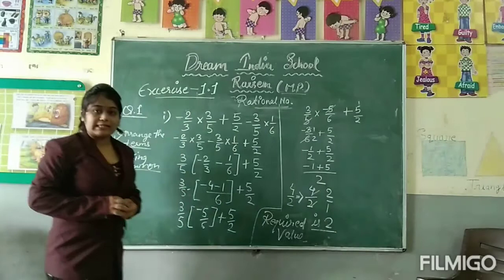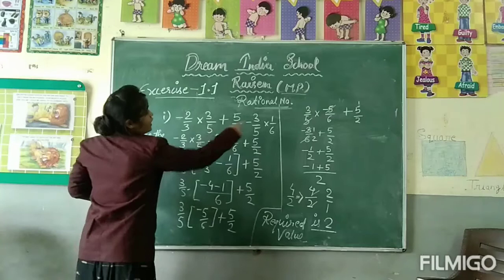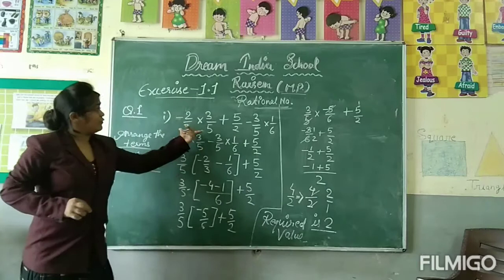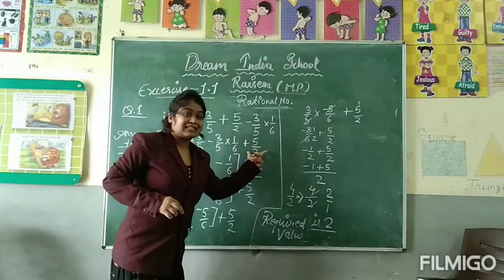We have 2 upon 3 into 3 upon 5, and last term is 3 upon 5. So we have to arrange this and provide the like terms together. First term, last term, second term, last term, because we have 3 upon 5.